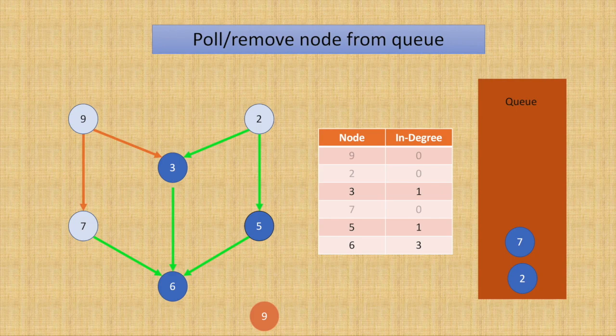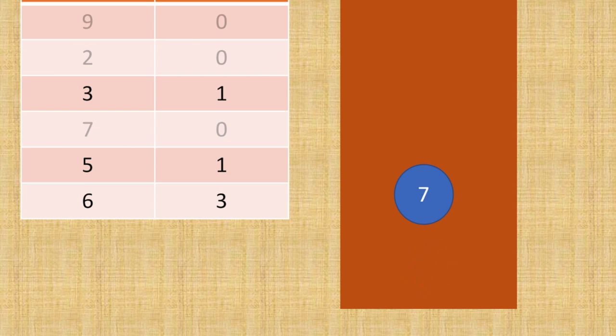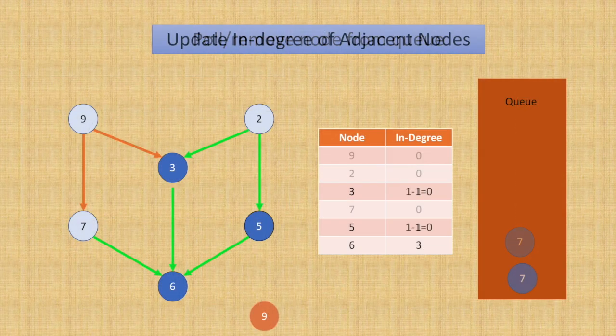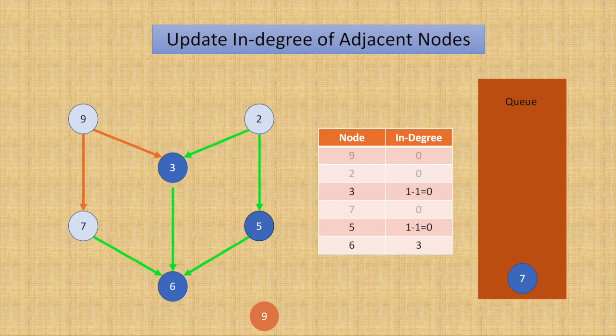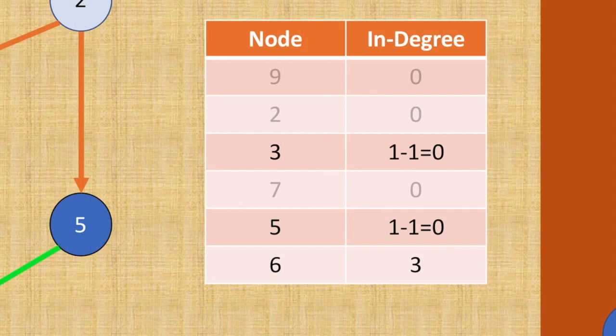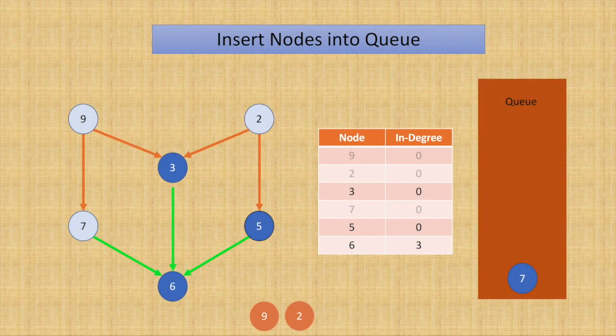Once this is done, we'll again pull nodes from the queue. This time we'll pull node 2. We'll repeat the process of updating in-degrees of adjacent nodes of 2, which are here node 3 and node 5.